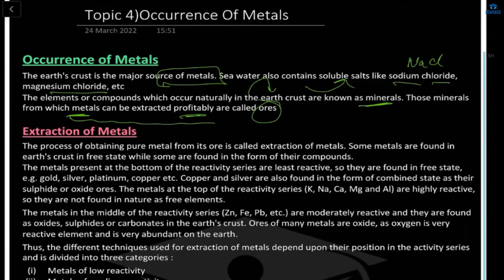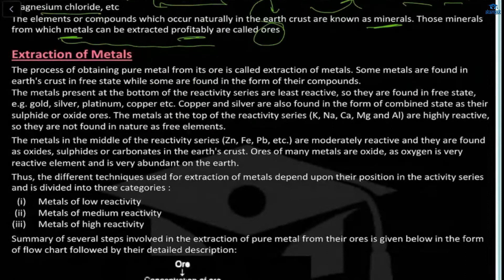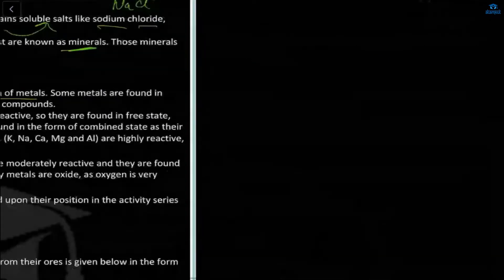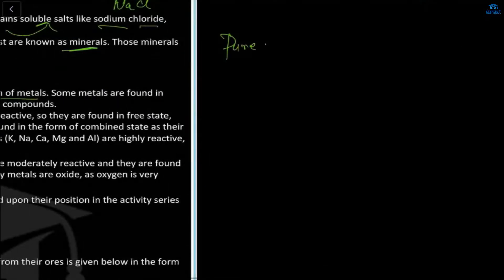The process of obtaining pure metal from ore is known as extraction of metal. Elements which occur naturally are minerals; those minerals from which metals can be extracted are ores; and the process of obtaining pure metals from ores is extraction of metal.